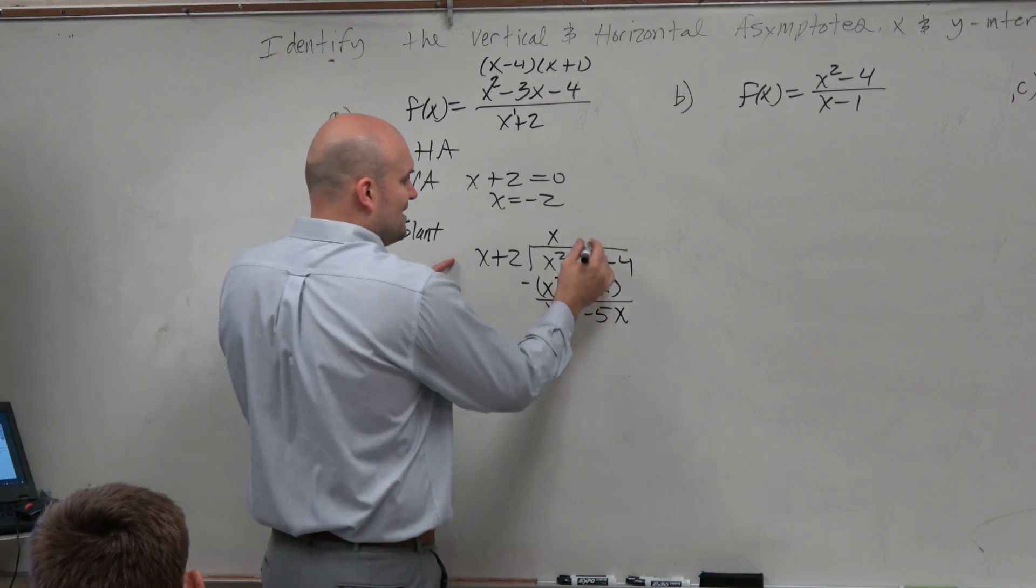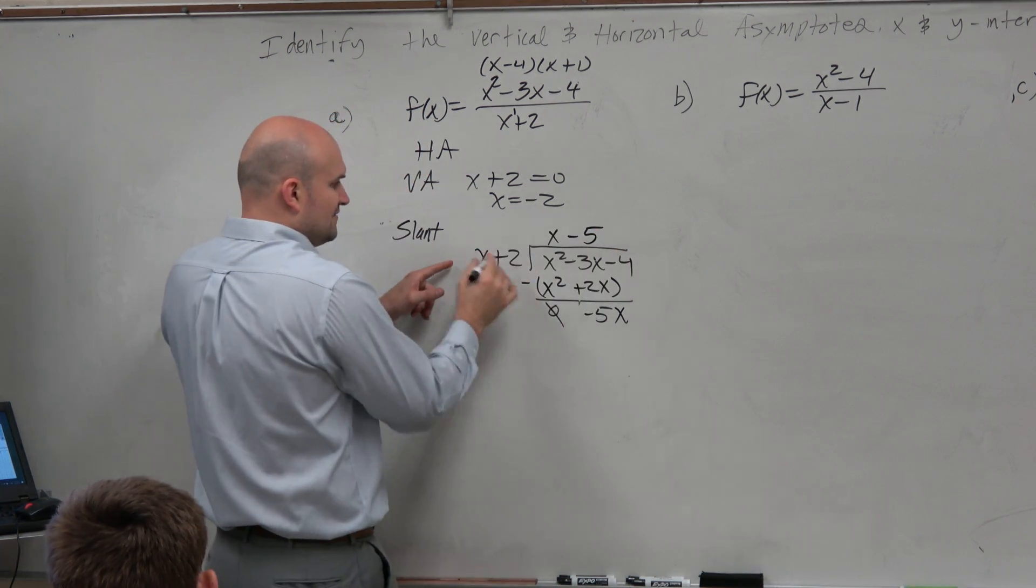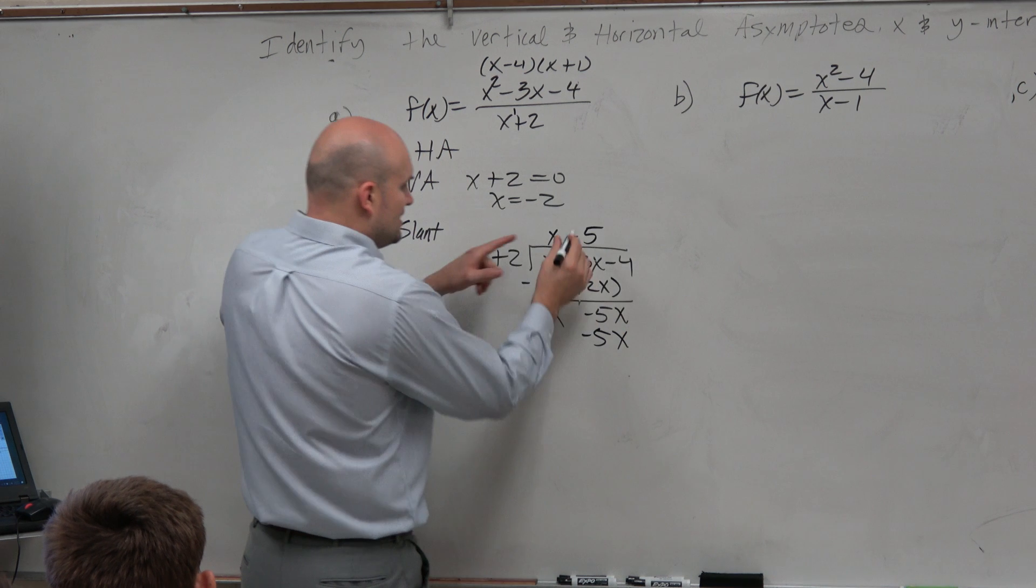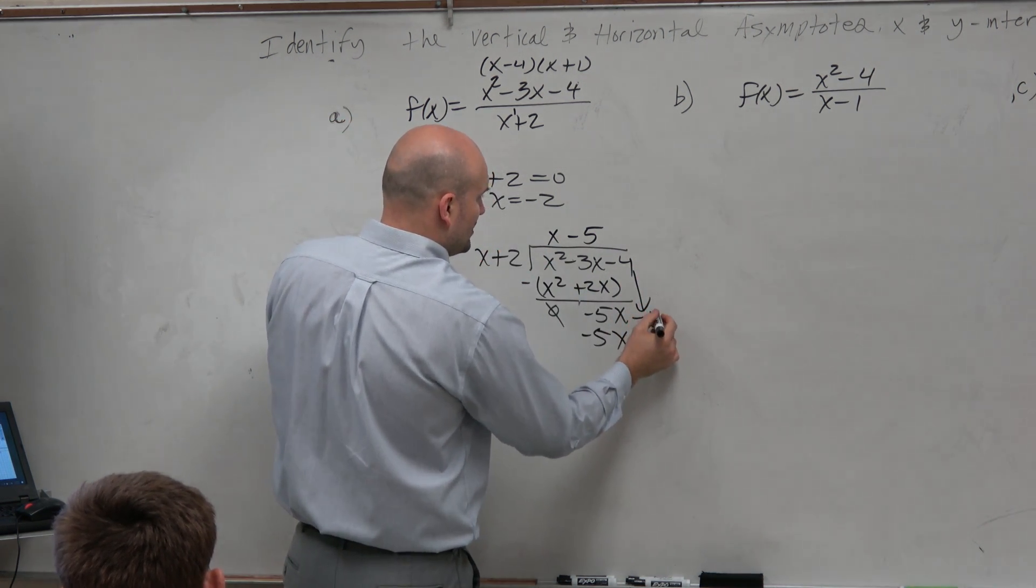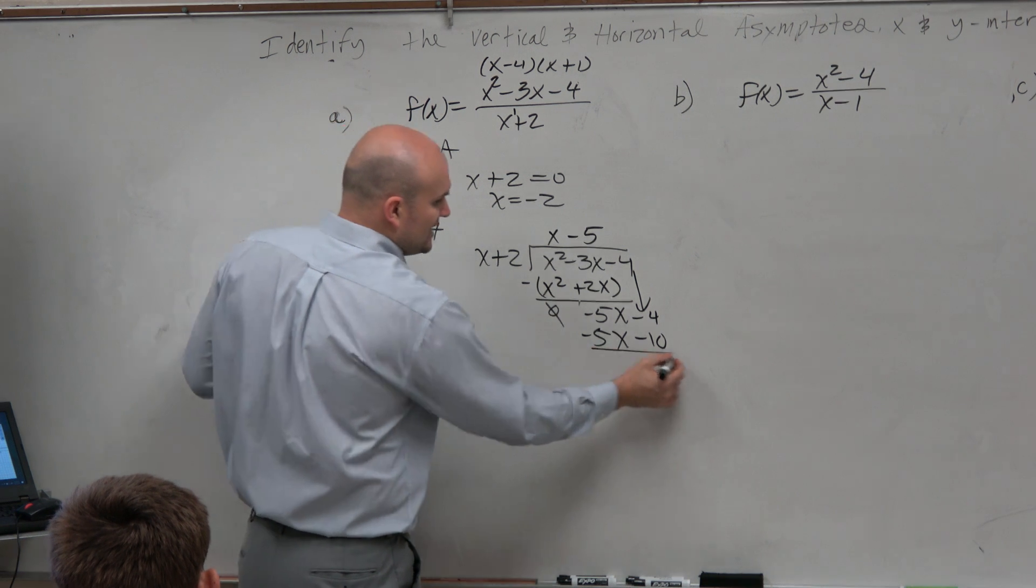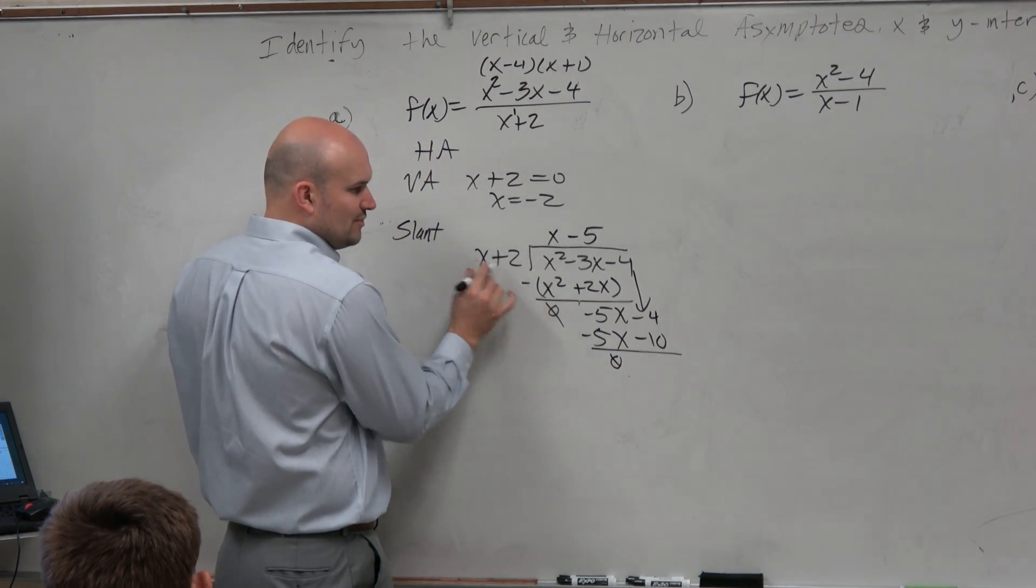x goes into negative 5x, negative 5 times. Negative 5 times x is negative 5x. Negative 5 times 2 is negative 10. Bring down the negative 4. Now again, you could do this, but what you guys will see is this is really a waste of time.